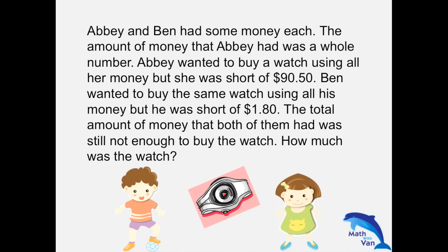AB and Ben had some money each. The amount of money that AB had was a whole number. AB wanted to buy a watch using all her money, but she was short of $90.50. Ben wanted to buy the same watch using all his money, but he was short of $180. The total amount of money that both of them had was still not enough to buy the watch. How much was the watch?